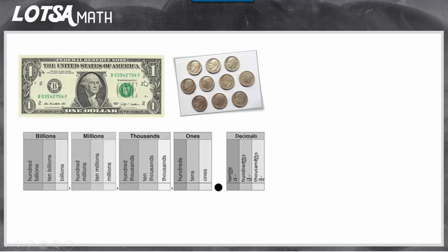We can look at that by thinking about a dollar and that it takes ten dimes to equal the dollar. That's because of the same thing we've been learning about place value and the relationships between spots. When you move from the one spot to the tenth spot, you are going to the right and the value is getting ten times smaller — you're dividing it up into ten parts. That's what happens with a dime: you divided a dollar up into ten parts, so now you have ten dimes. But those ten dimes, if you add them up, still are the same as a dollar.